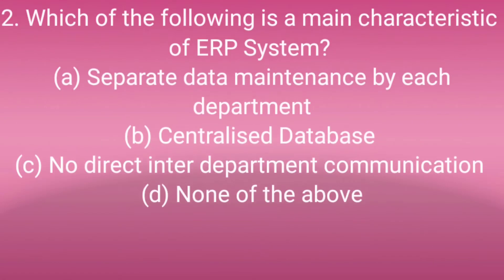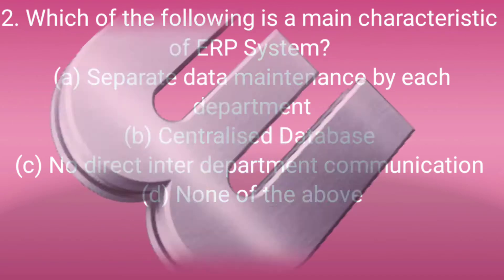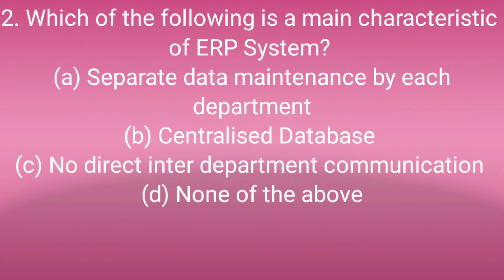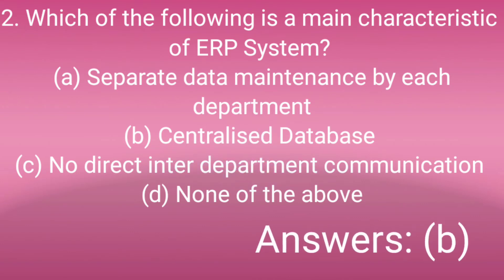Question number two: Which of the following is the main characteristic of an ERP system? Option A: Software data maintenance by its department, Option B: Centralized database, Option C: No direct inter-department communication, Option D: None of the above. The answer should be B — Centralized database. Answer is B.